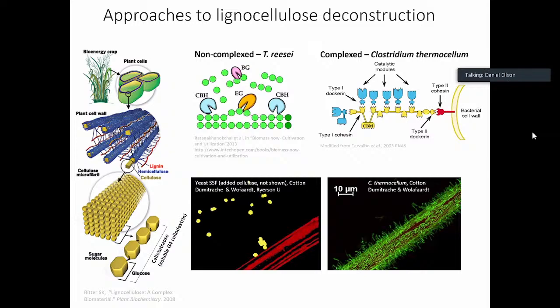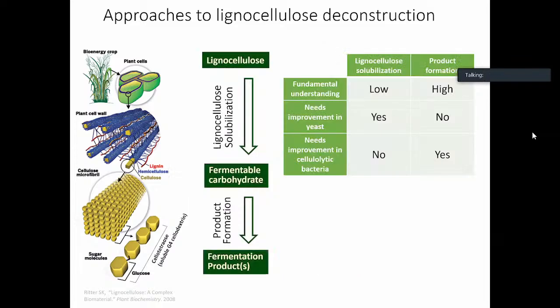One of the big expenses of the traditional paradigm is the expensive enzyme production. That's expensive in terms of capital costs, because there's a separate unit operation required to produce the enzyme. It's also expensive because you have to divert a fraction of your substrate to produce the enzyme, and production of fungal enzymes requires oxygen, so running oxygenated fermenters is also an added expense.